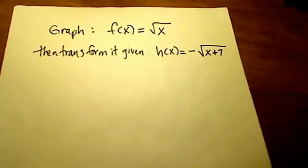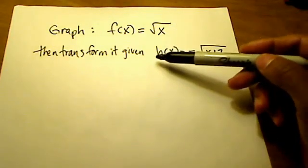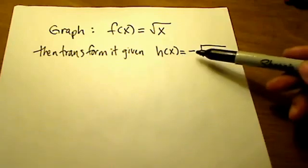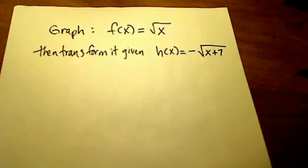All right, I'm going to show you how to graph a square root function, square root of x, and then we're going to transform it using h(x) here, negative sign out front, and what happens if we add a 7 to the x inside the square root.